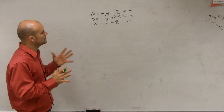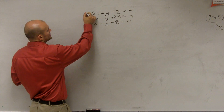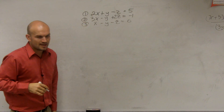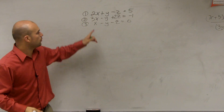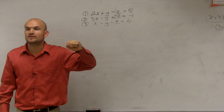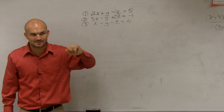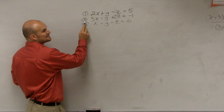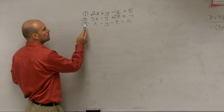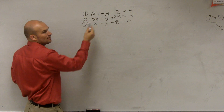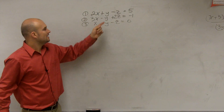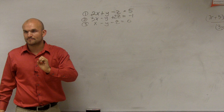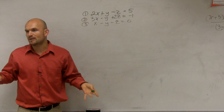It doesn't matter which one you want to eliminate, but I'm going to write them down as equation one, equation two, equation three. What I notice is that y in equation one is probably the easiest to eliminate, because if I add equation one and equation two, and equation one and equation three, I don't have to multiply by any multiplier. Every single time, y plus negative y always gives me zero y.